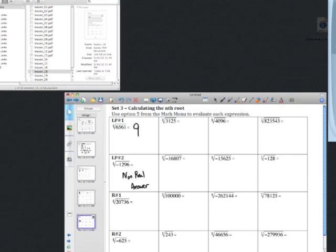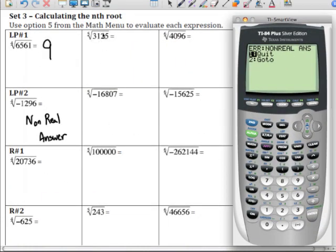So, let's just do one more. Let's take the fifth root of 3,125. I need to quit that. Type in my index of 5, hit math. Go down to choice 5. Enter in 3,125. Hit enter. And we have 5 as our answer.